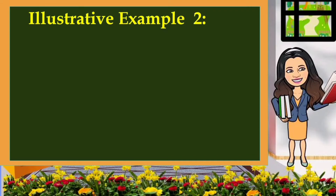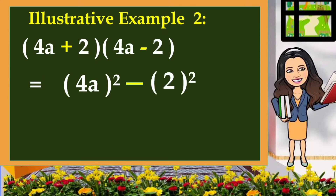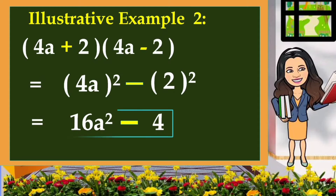Let us have another example. Given the quantity 4A plus 2 multiplied by 4A minus 2. So, let's use the process from a while ago: we square the first term minus we square the last term. The square of 4A times 4A is equivalent to 16A squared, minus the square of 2, that is 4. So, this is the result of the product of 4A plus 2 and 4A minus 2.